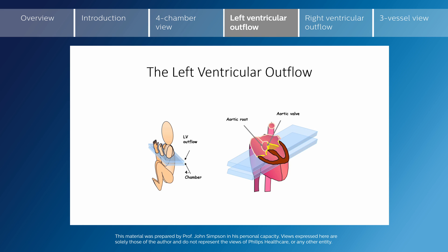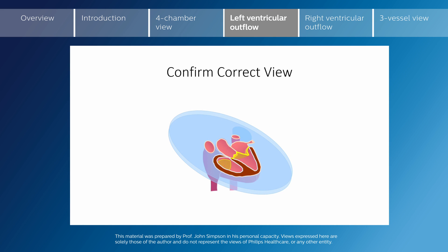As we sweep up towards the left ventricular outflow tract, we are sweeping superiorly from the four-chamber view. This is done to bring in the left ventricular outflow tract. We can see in the diagram the aortic valve and the aortic root, which lie above the plane of the four-chamber view shown by the blue planes below. We need to confirm the correct view by seeing the aorta as it leaves the left ventricle, making a very slight angulation upwards and slightly obliquely to bring in this view.